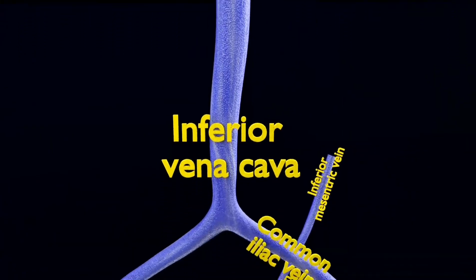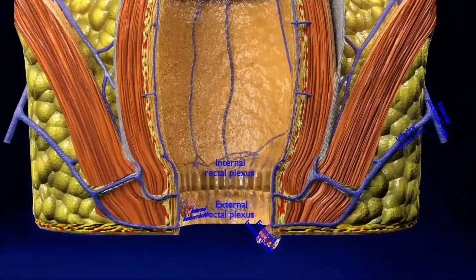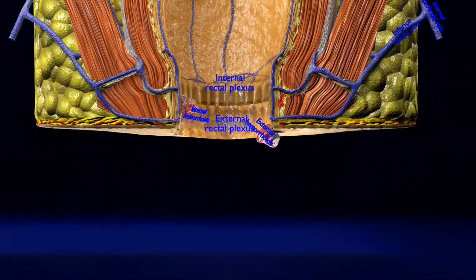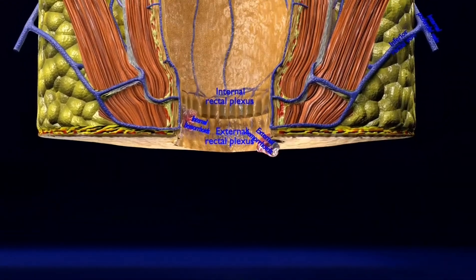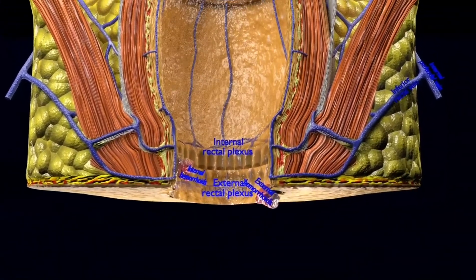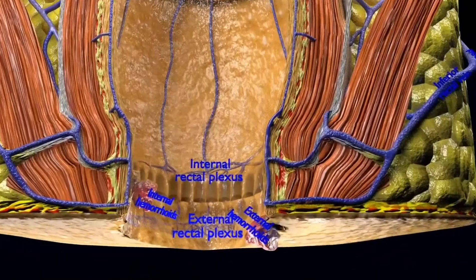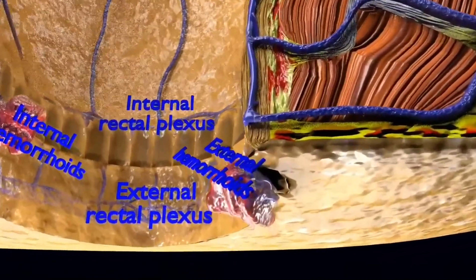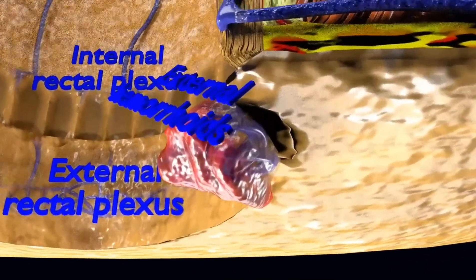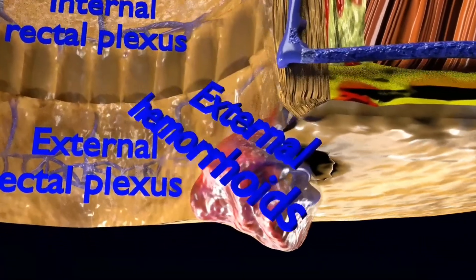We are going to focus on the external hemorrhoids. These are under the skin around your anus. Signs and symptoms might include itching or irritation in your anal region, pain or discomfort, swelling around your anus, and bleeding.